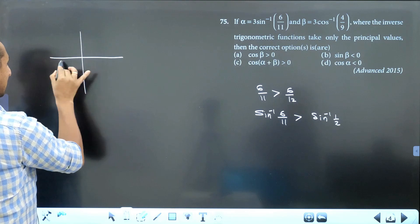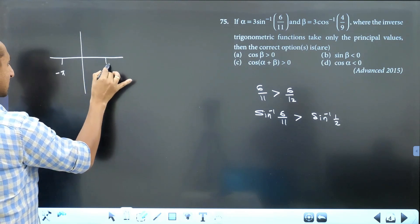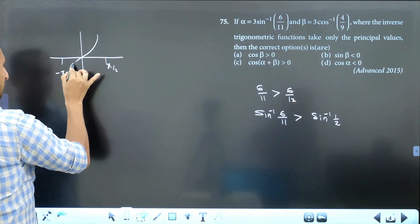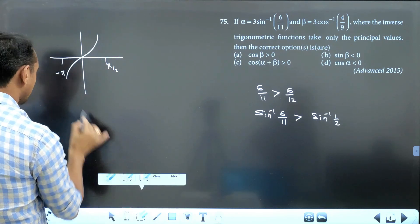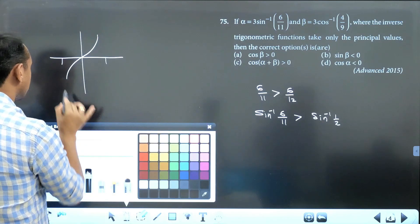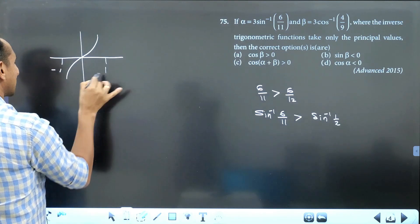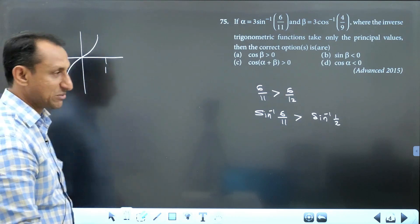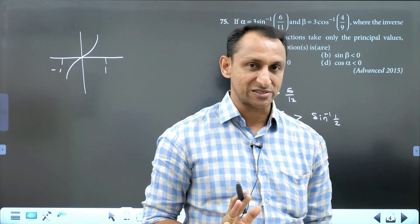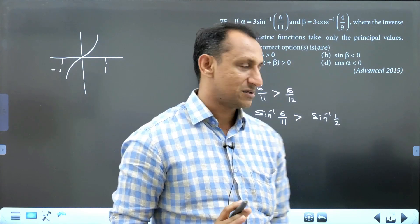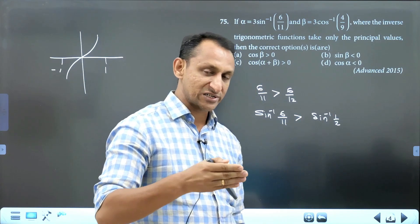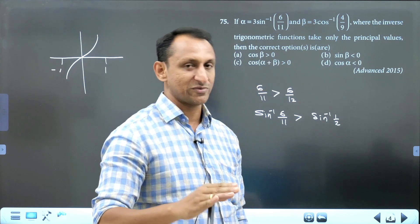Sine inverse is an increasing function with domain from −1 to 1 and range from −π/2 to π/2. Since it is an increasing function, the inequality does not change. In an increasing function, if x₁ > x₂, then f(x₁) > f(x₂).